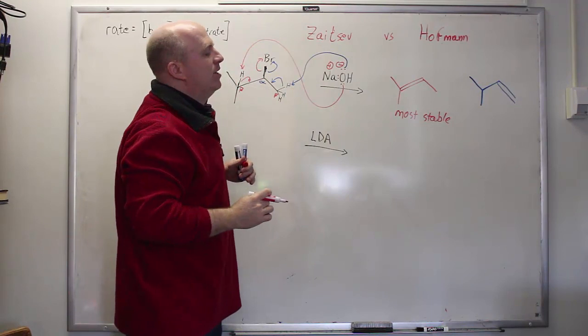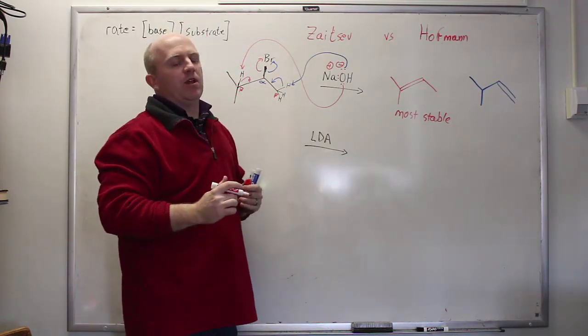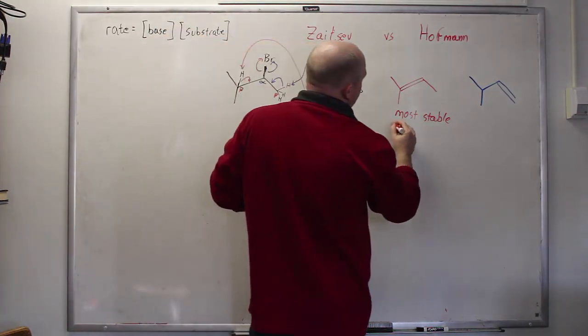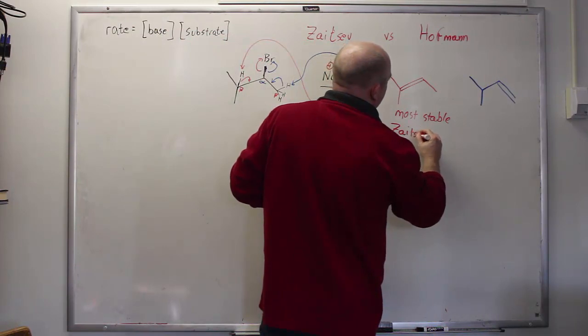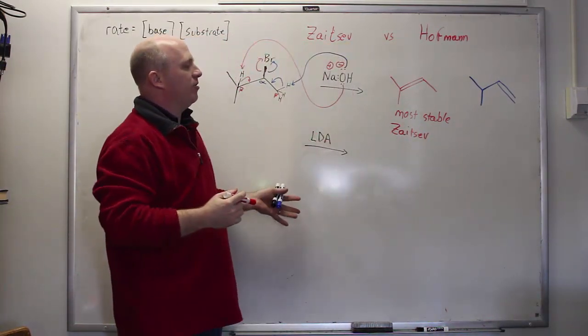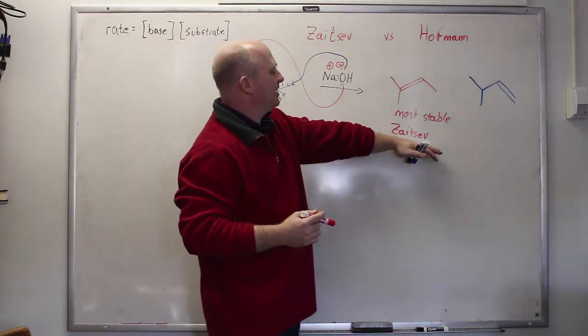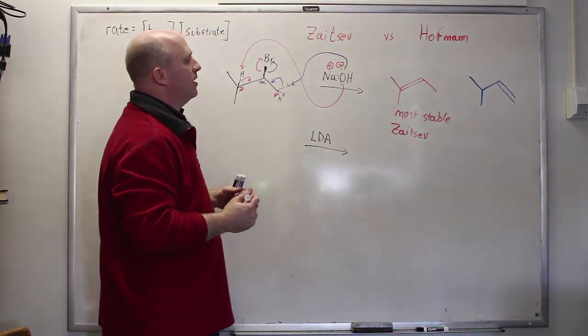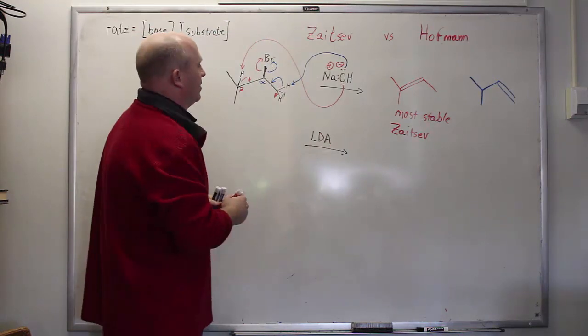And a Russian guy back in the day when E2 eliminations were being worked out realized that almost always with small bases, you try to form the more thermodynamically favored product. In fact, that tries to happen also with larger bases, but the Zaitsev product is going to be the most stable double bond that you can form thermodynamically.